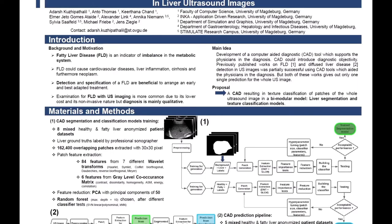Additionally, we extracted six features from the gray level co-occurrence matrix (GLCM), which are contrast, similarity, homogeneity, ASM, energy, and correlation. A feature importance test was then performed, as well as PCA dimensionality reduction, before building and testing a classifier to evaluate performance.